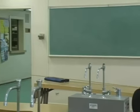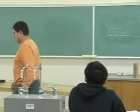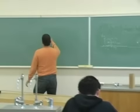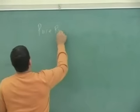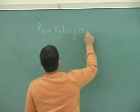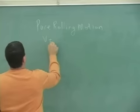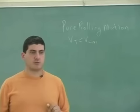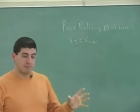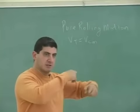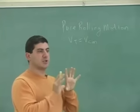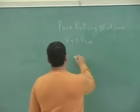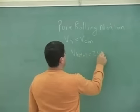What you're seeing here is an example of pure rolling motion. This is the definition of pure rolling motion: V_tangential equals V_center_of_mass. For pure rolling motion, V_tangential equals V_center_of_mass. That means the rate at which it's turning is equal to the rate at which it's moving forward. So V_total at the top is twice V_center_of_mass.